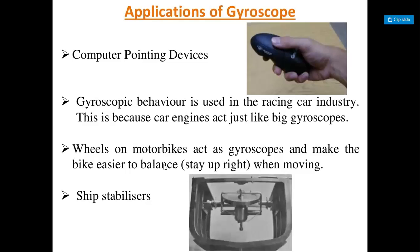The applications where gyroscopic behavior is used include computer pointing devices, the racing car industry — because a car engine acts just like a big gyroscope — and wheels on a motorbike, which act as gyroscopes and make the bike easier to balance when moving. Stabilizers also use gyroscopic principles.